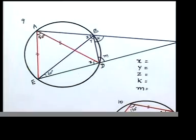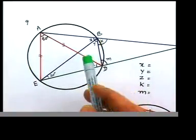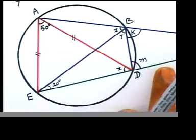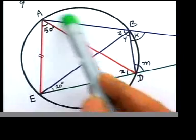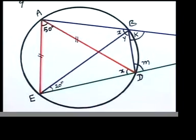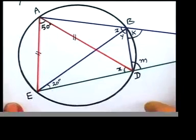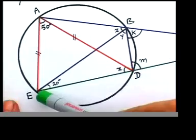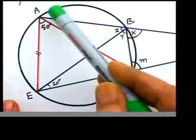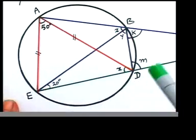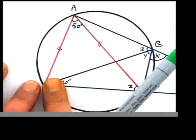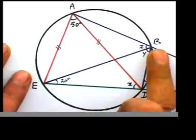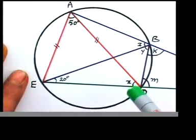Question 9 is on the screen. We have a circle — let's concentrate on the circle given to us. We have a cyclic quadrilateral ABDE. AD and BE are joined, and there are two equal marks, so be careful: that's going to be an isosceles triangle. We need to find x, y, z, k, and m.